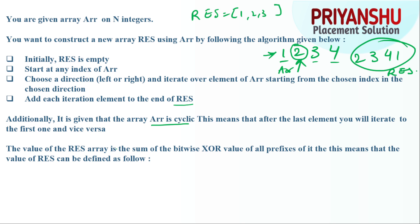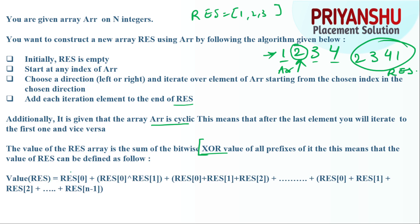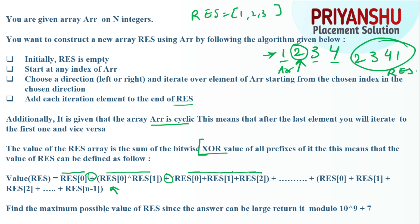The value of the `res` array is the sum of the bitwise XOR values of all its prefixes. Specifically, we take index zero, then XOR of index zero and one, then XOR of index zero, one, and two, and so on, and add all those results. I will show a trick to perform this using a single loop. Finally, you need to find the maximum possible value of `res`, and since the answer can be large, return it modulo 10 to the power 9 plus 7.